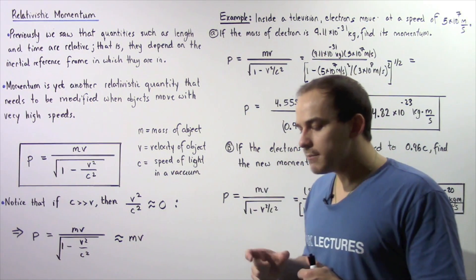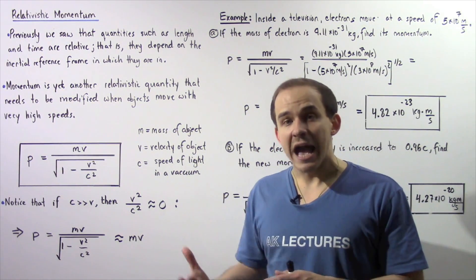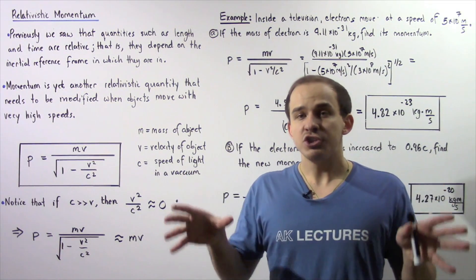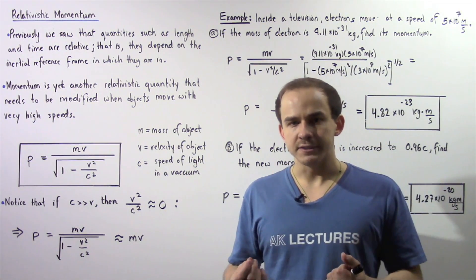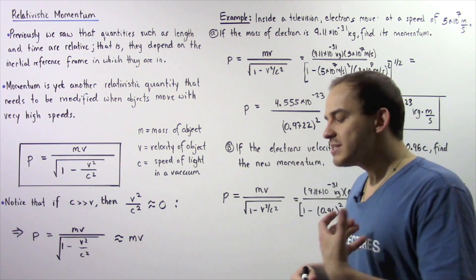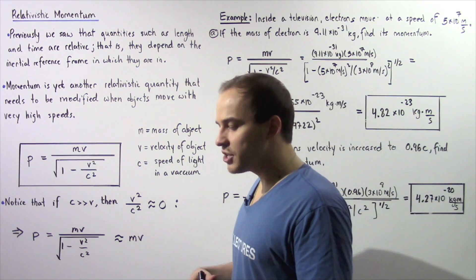The length of an object or the time elapsed for an event within those two inertial reference frames will be different. That is known as time dilation and length contraction.